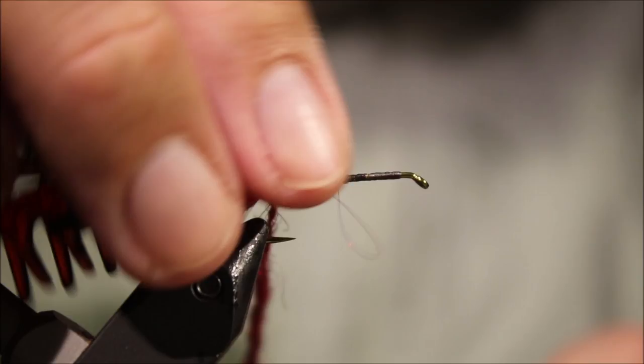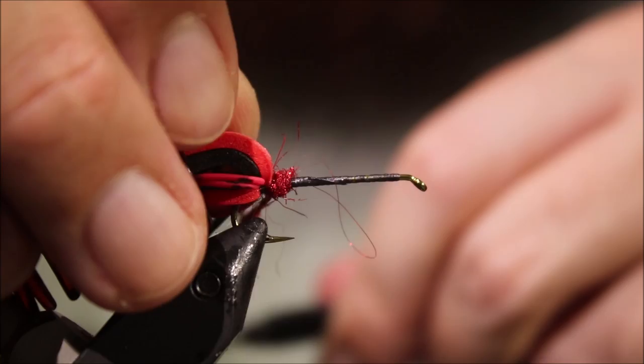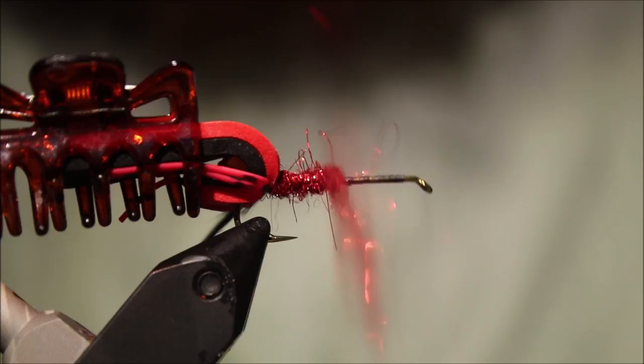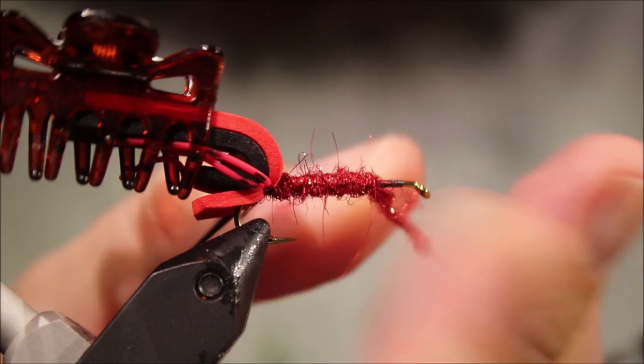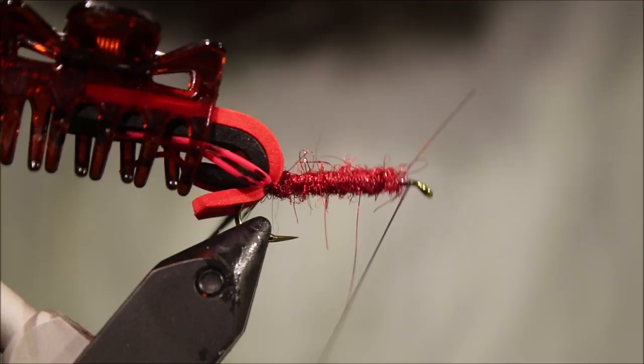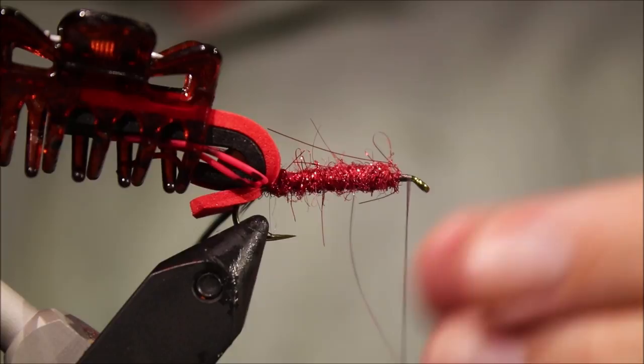So starting my dubbing and I'm actually going back first to make sure I'm right in to the tie in of the foam. And then I'll come forward and start filling up this body. There's a wee clump there I don't like, just tighten that up. I'll take my thread forward to nearly at the eye. I've got a couple of mil space, which is plenty.